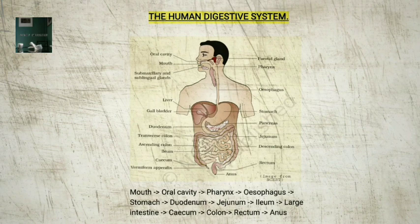The small intestine is distinguishable into three regions: 1. U-shaped duodenum. 2. Long-coiled middle portion, jejunum. 3. Highly-coiled ileum. The opening of the stomach into the duodenum is guarded by the pyloric sphincter.